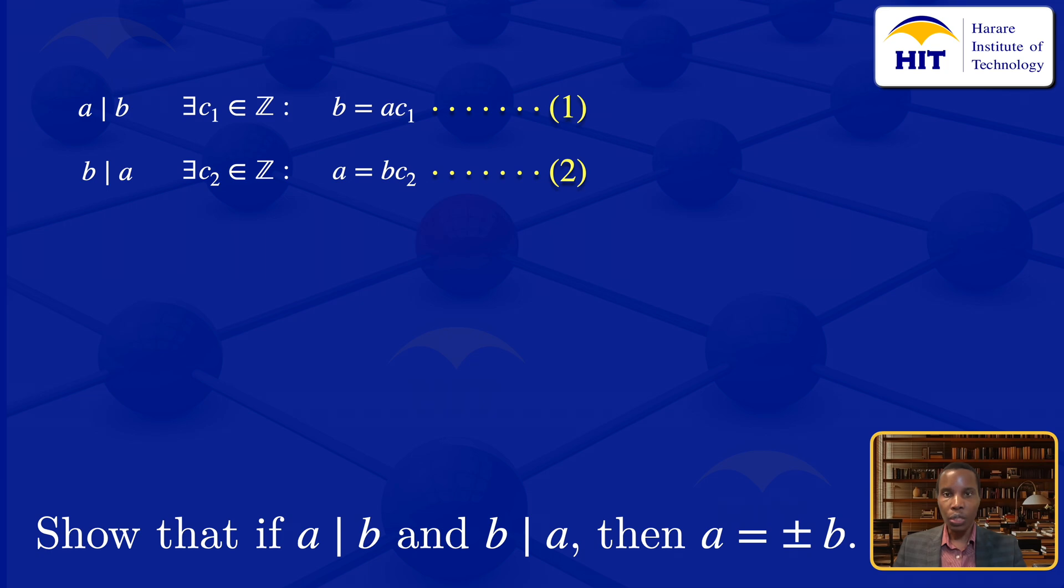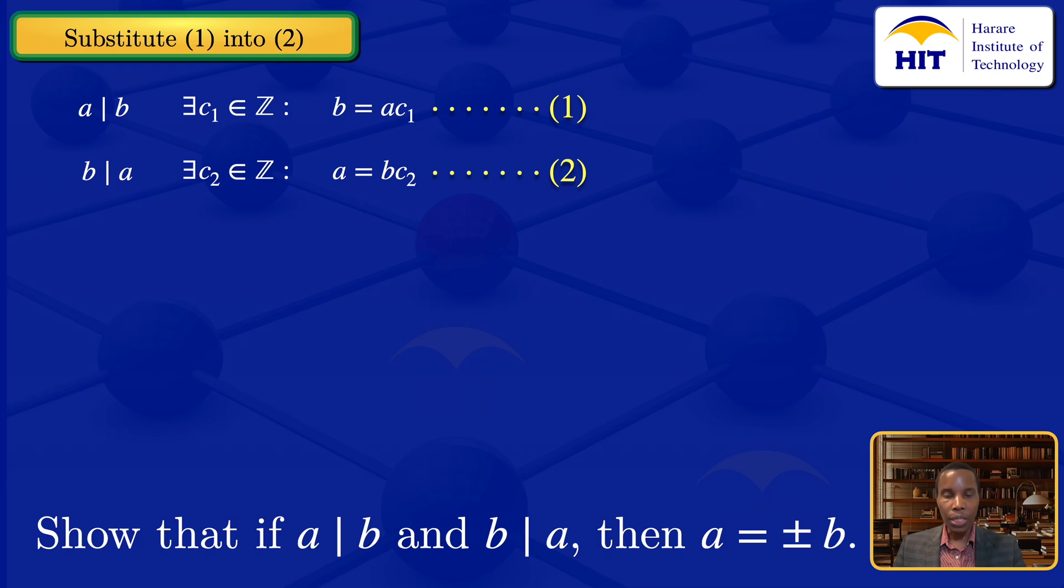We have these two equations, and I'll substitute equation 1 into equation 2. We have B here; B = AC₁. Substituting into equation 2, we get A = AC₁C₂.